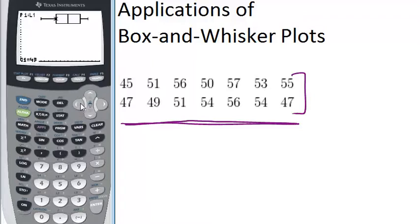I can scroll over and see Q1, which is the median of the first half, is 49. And I can see my minimum is 45. And going in the other direction, I'm still on trace. I have my max is 57. And my Q3, which is the median of the second half of data, is 55.